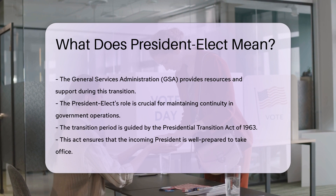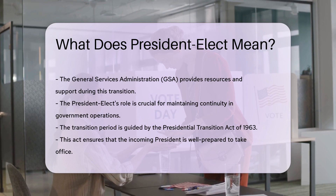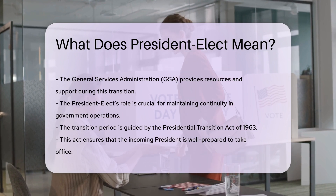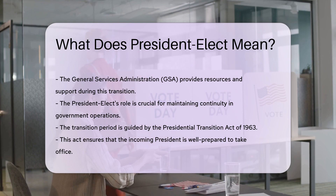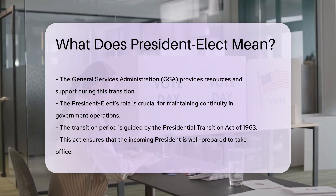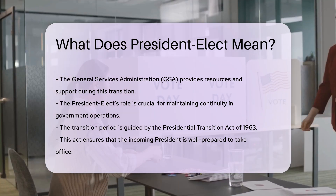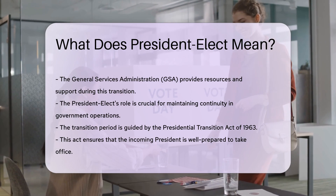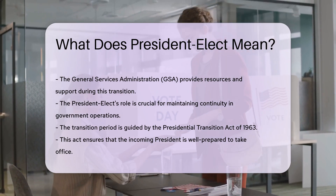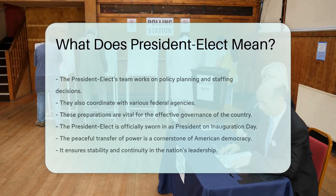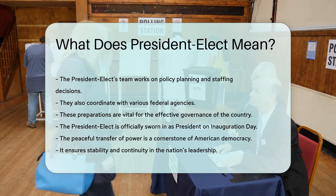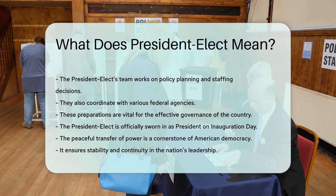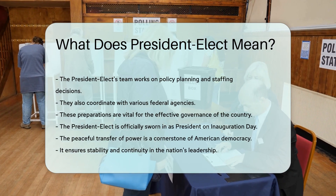The transition period is guided by the Presidential Transition Act of 1963. This act ensures that the incoming president is well-prepared to take office. The President-Elect's team works on policy planning and staffing decisions, and coordinates with various federal agencies. These preparations are vital for the effective governance of the country.